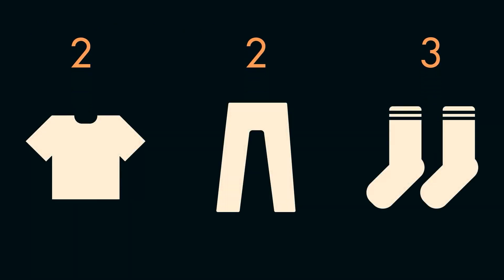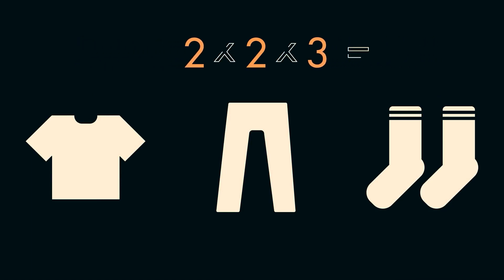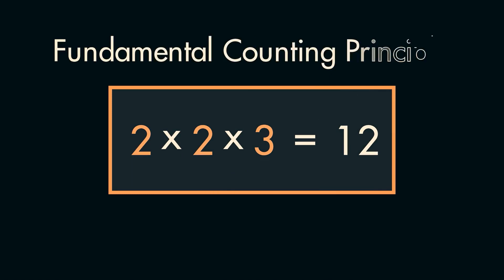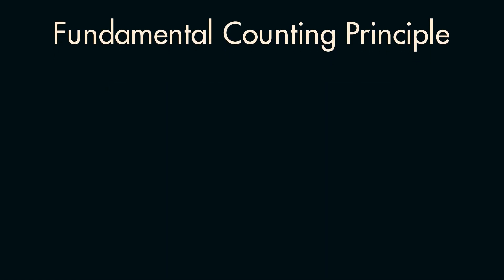Let's start with the basics — elementary even. If I asked you how many combinations of outfits exist if you get to choose one of two shirts, one of two pants, and one of three sock pairs, then what would your answer be? My guess is that you're able to quickly come up with 12 as your answer by simply multiplying the different choices together. What you're doing there is called the fundamental counting principle.